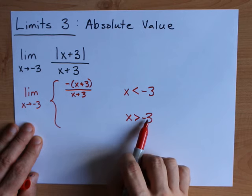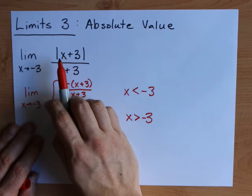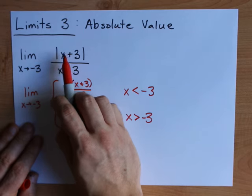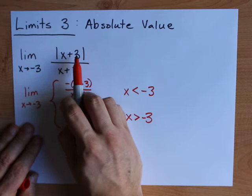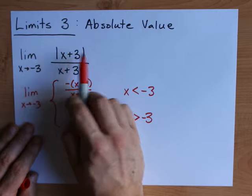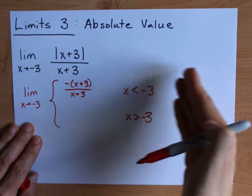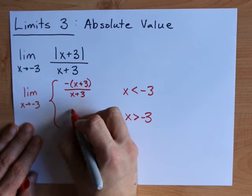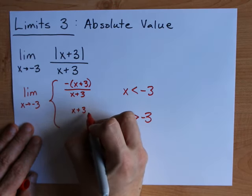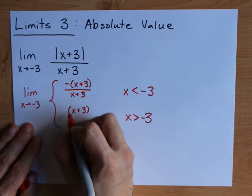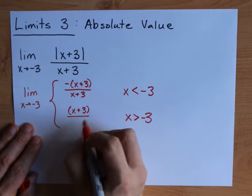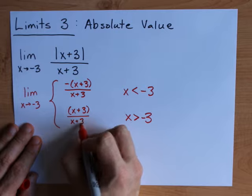When x is greater than negative three, that could be negative two, negative one, a hundred, positive a million. Whatever that number is and you add three, it's positive. So the effect of the absolute value bars is nothing. It doesn't change the sign because it's already positive. So that means that I can ignore those absolute value bars. I like putting them as round brackets just so I remember. And then I can keep the x plus three on bottom as well.